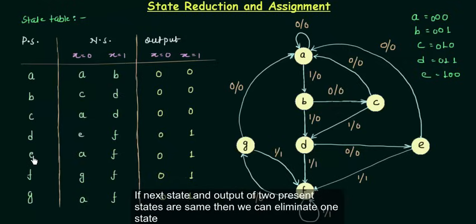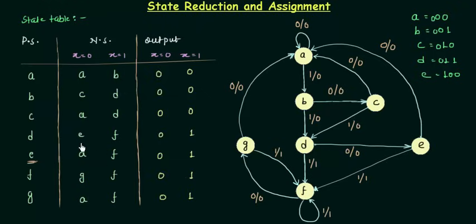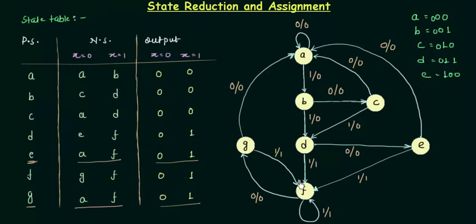Analyzing the table, for state E I have next state A, F and output 01. Similarly for G, the next state is A, F and output is 01. In the state diagram, if I am on E and input is 0 I go to A, and if input is 1 I go to F. Similarly, if I am on G and input is 0 I go to A, and if input is 1 I go to F. So they have the same output and the same next state.